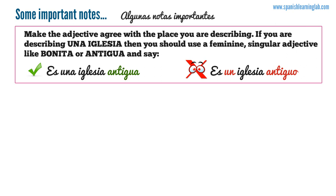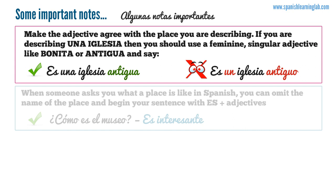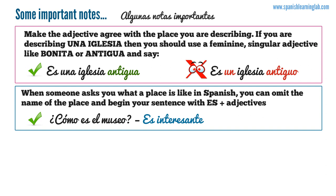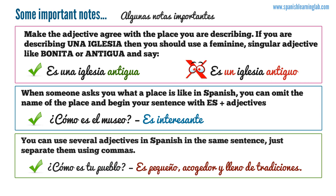Important notes. Remember to make the adjective agree with the place you are describing. If you are describing 'una iglesia', then you should use a feminine singular adjective like 'bonita' or 'antigua' and say 'es una iglesia antigua', not 'es un iglesia antigua'. When someone asks you what a place is like in Spanish, you can omit the name of the place and begin your sentence with 'es' plus the adjective — for example, '¿Cómo es el museo?' — 'Es interesante.' You can also use several adjectives in the same sentence, separated by commas — for example, '¿Cómo es tu pueblo?' — 'Es pequeño, acogedor y lleno de tradiciones.'